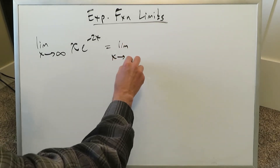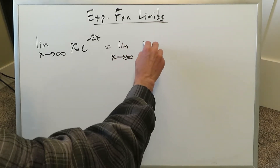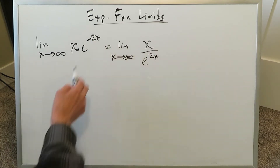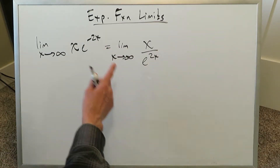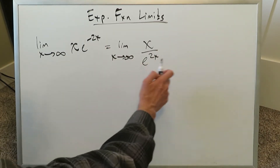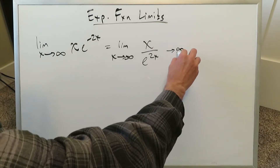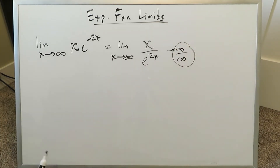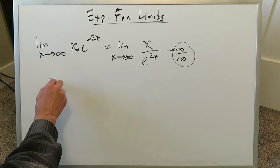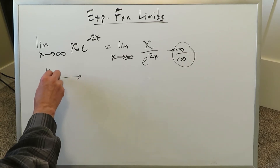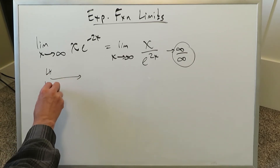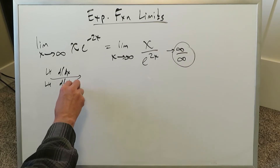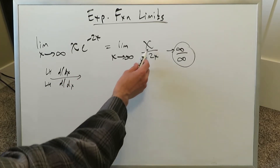Limit as x approaches infinity — why don't we just look at it as x over e to the 2x? Because a negative exponent indicates a reciprocal. Now when you put infinity over here, you very easily arrive at the basic indeterminate form infinity over infinity, for which you can go directly into L'Hôpital's rule. Take the derivative of the numerator and the derivative of the denominator.